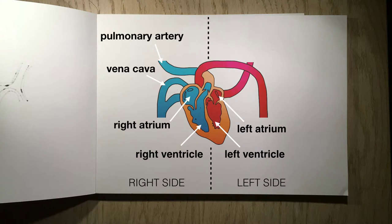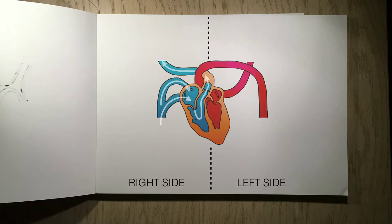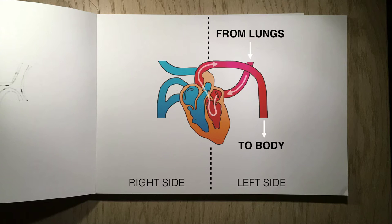The left ventricle and the left atrium are the chambers of the heart. The pulmonary vein and the aorta connect the left side of the heart to the rest of the body. Blood flows on the right side of the heart from the body, through the heart, and to the lungs where it becomes oxygenated. Blood from the lungs gets pumped to the body on the left-hand side of the heart.